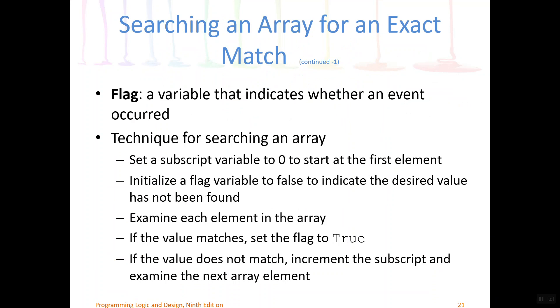We can do that by using what's called a flag. A flag is just a special variable that indicates whether an event occurred. So we can create a variable, for example, called foundIt and set that variable to false if it's a boolean variable or N if it's a string variable to say we haven't found it yet because we're just starting our program. But then as we loop through the array, if we find a match, that flag variable can be updated to true, foundIt is true, or foundIt is Y if we're dealing with strings.